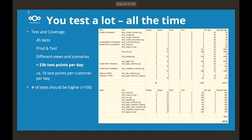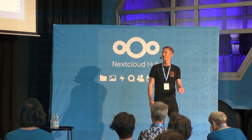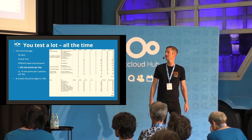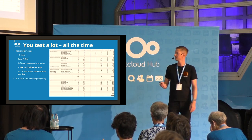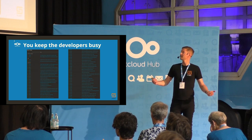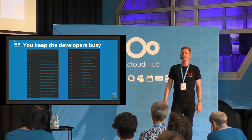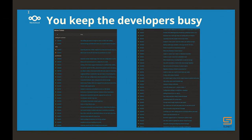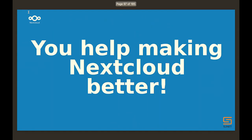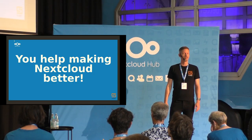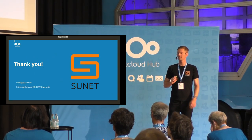In the end, we test a lot. We have 45 tests and create around 23,000 test results every single day — about 1,000 test points per customer per day. The goal is to extend this with even more tests. We keep the developers busy too: this is from our Nextcloud support queue where we write a lot of tickets, find issues, and solve issues. In the end, you help make Nextcloud a better product by having this type of test automation. Thank you.